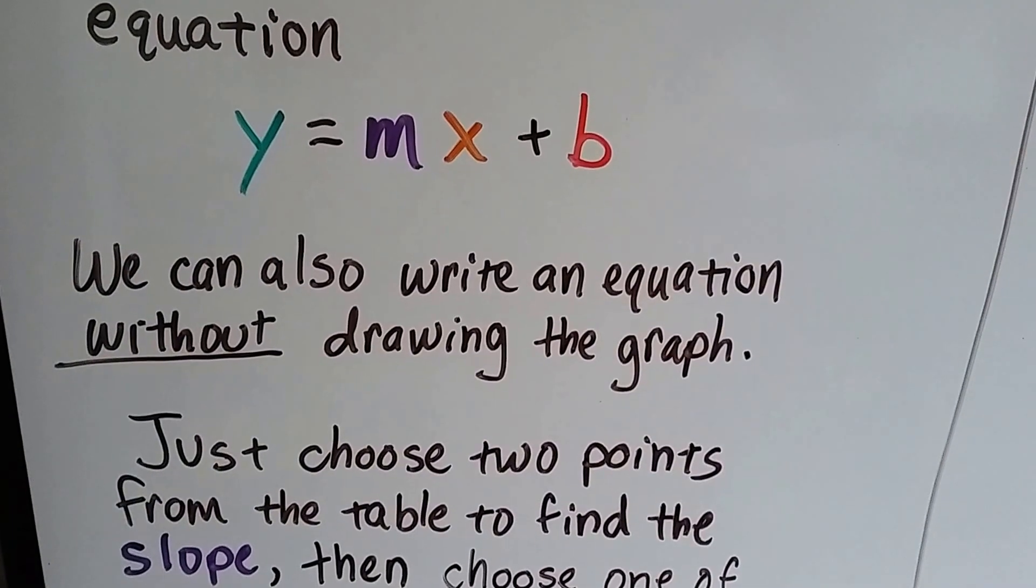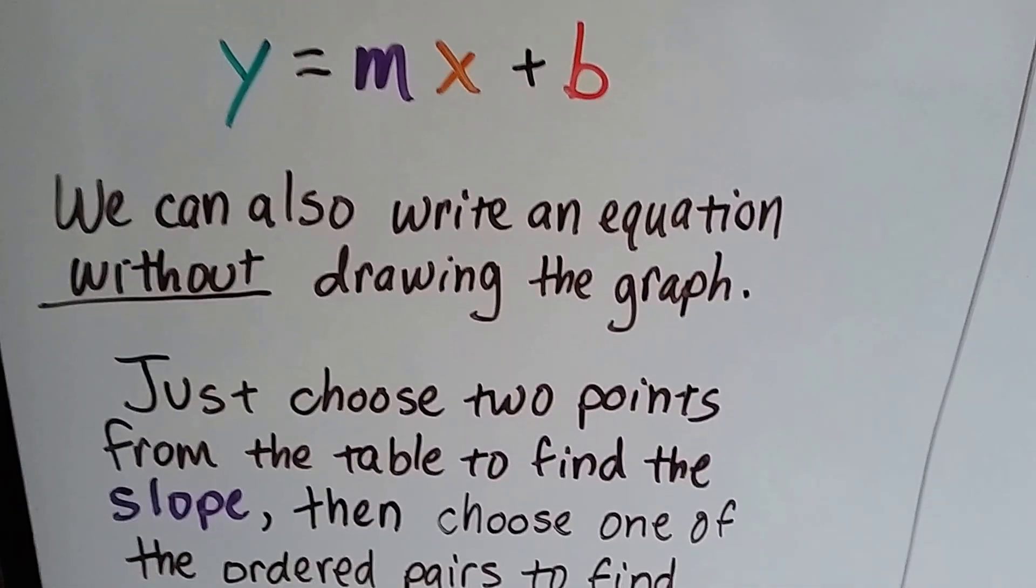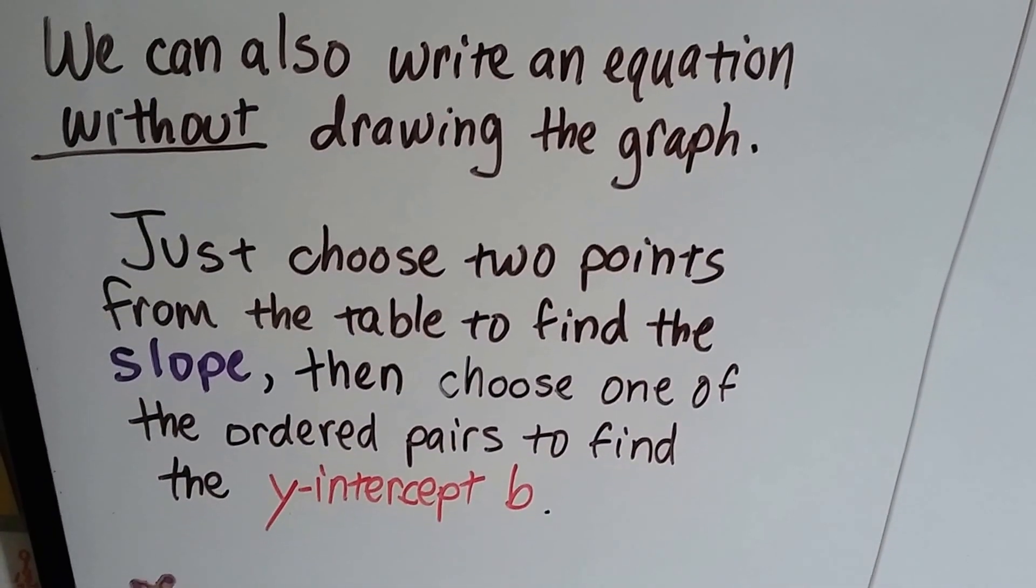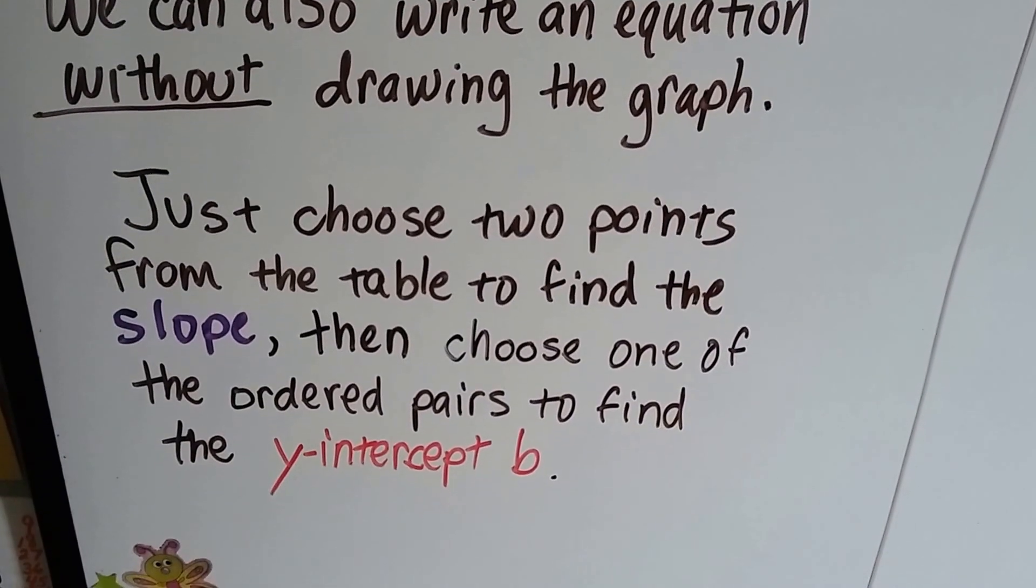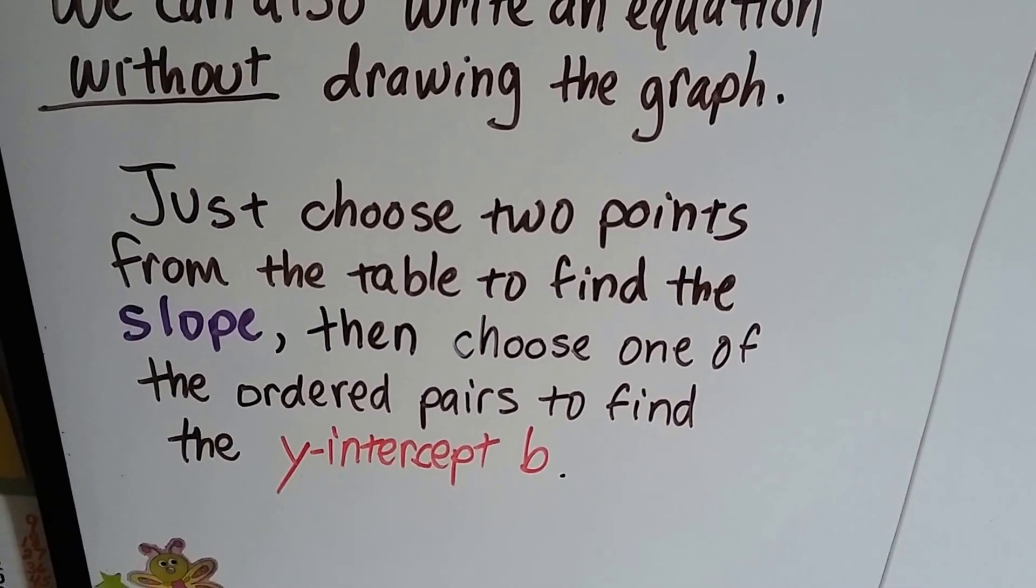We can also write an equation without drawing the graph. Just choose two points from the table to find the slope, then choose one of the ordered pairs to find the y-intercept b.